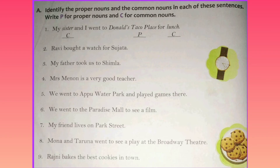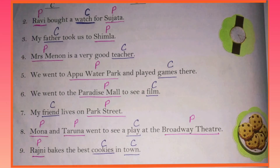Next, we are going to discuss exercises. Look at the first exercise: identify the proper nouns and the common nouns in each of these sentences. In this exercise, you have to identify which are the proper nouns and common nouns. So let's see which are the proper nouns in the sentences. These nouns belong to proper nouns, and you can also notice that proper nouns begin with a capital letter.